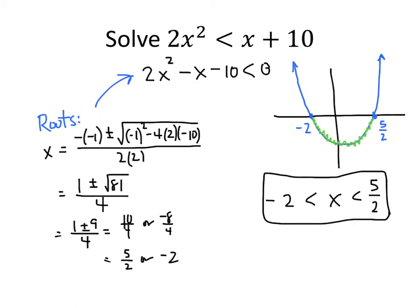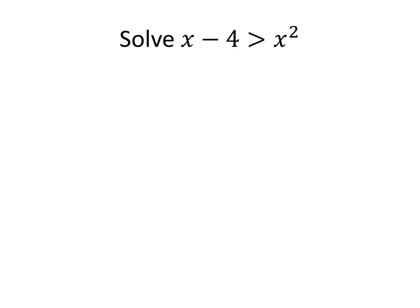Let's do one more. Solve the inequality x minus 4 greater than x squared. Again, we want everything on one side, so let's move everything to the right: x squared minus x plus 4 less than 0. Because the coefficient of x squared is 1, we might try to factor, but trial and error won't have much success. So let's use the quadratic formula again. Even though this isn't an equation, the roots can be helpful, as we saw in the previous example.